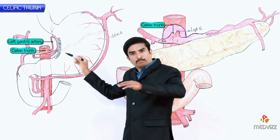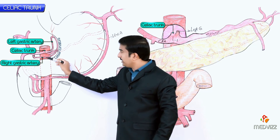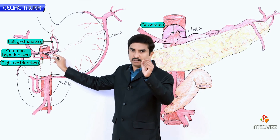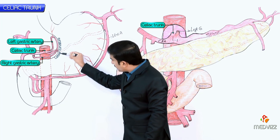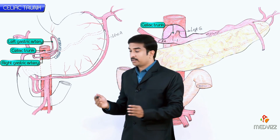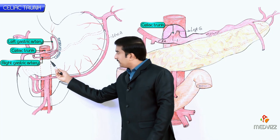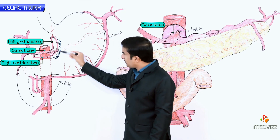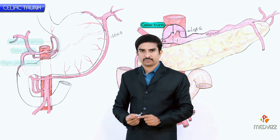After supplying those structures, the left gastric artery turns to the right and descends along the lesser curvature of the stomach, supplying both surfaces of the stomach in that area. It finally anastomoses with the right gastric artery, which is a branch of the common hepatic artery. The upper part of the lesser curvature is supplied by the left gastric artery and the lower part by the right gastric artery.